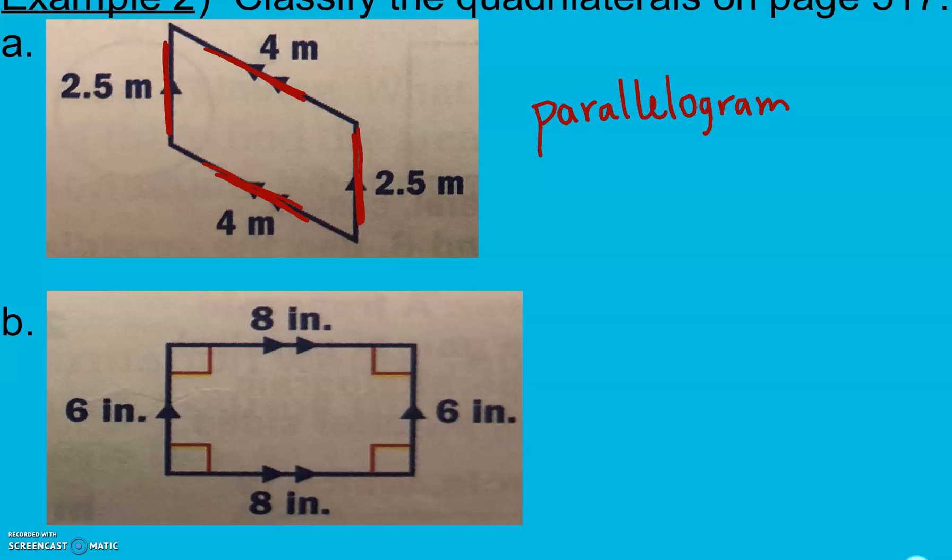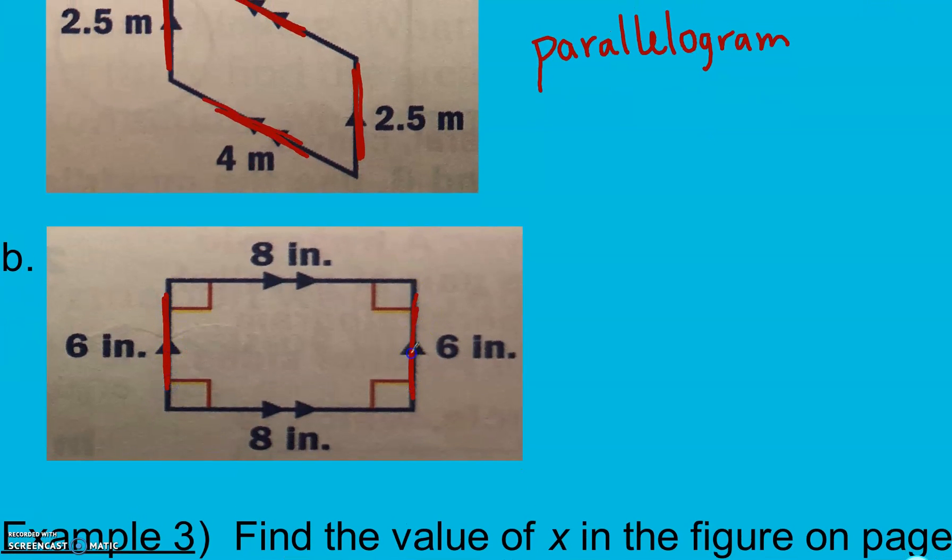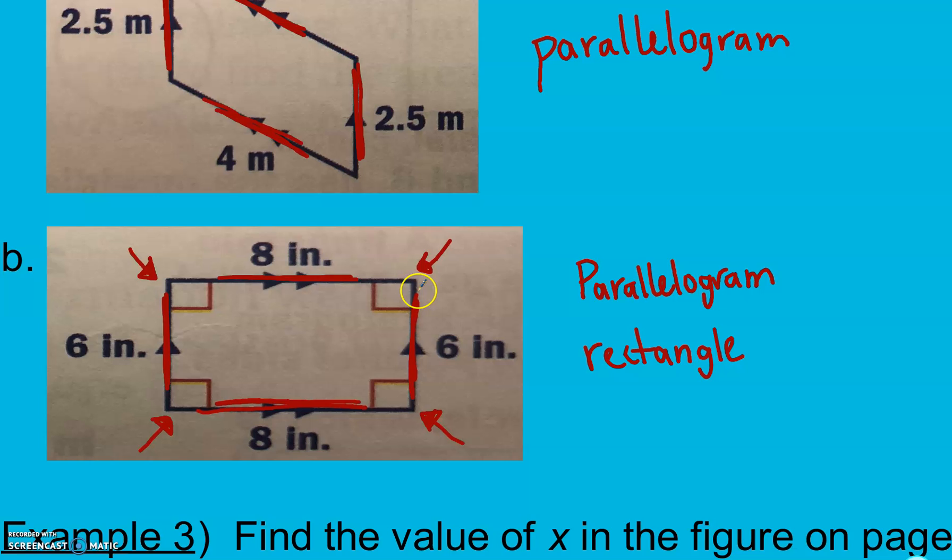In B, again, I have opposite sides that are parallel, and my top and bottom are also parallel. So this is a parallelogram. But if we wanted to be more specific, we also have four 90 degree angles, which makes this a rectangle. It's not a square or rhombus because my side lengths aren't all the same. My left and rights are six inches, my top and bottoms are eight. So it's a parallelogram, more specifically, a rectangle.